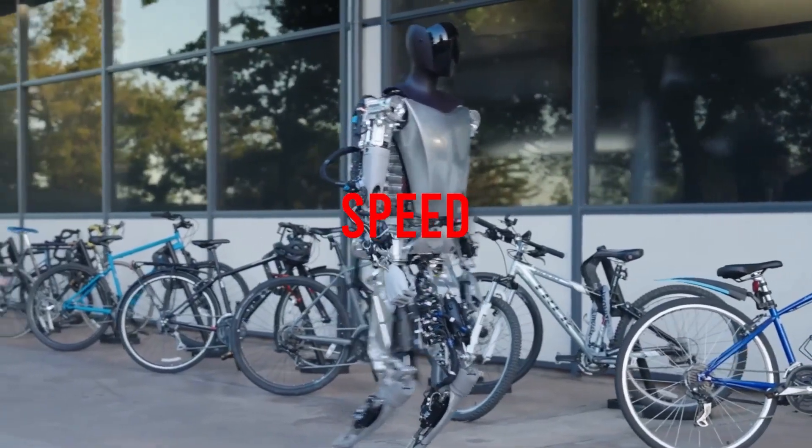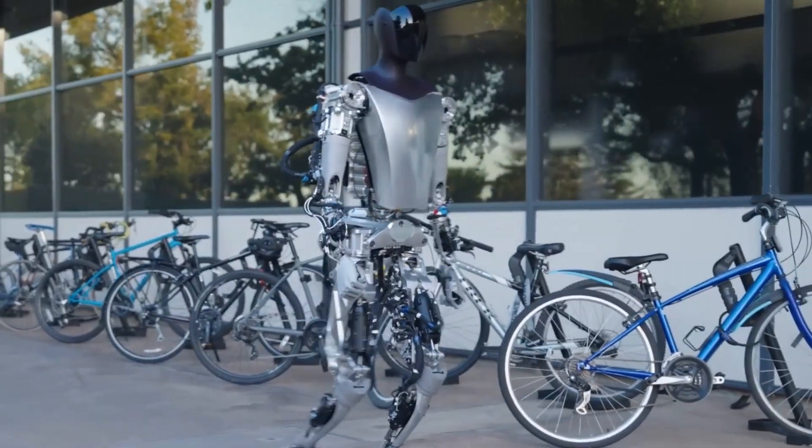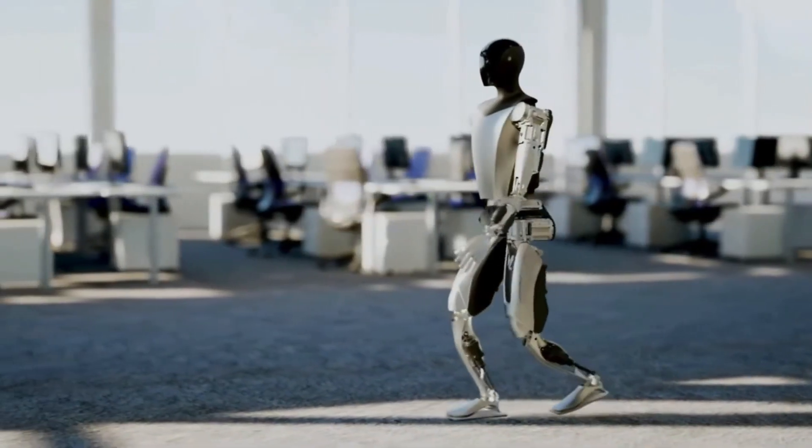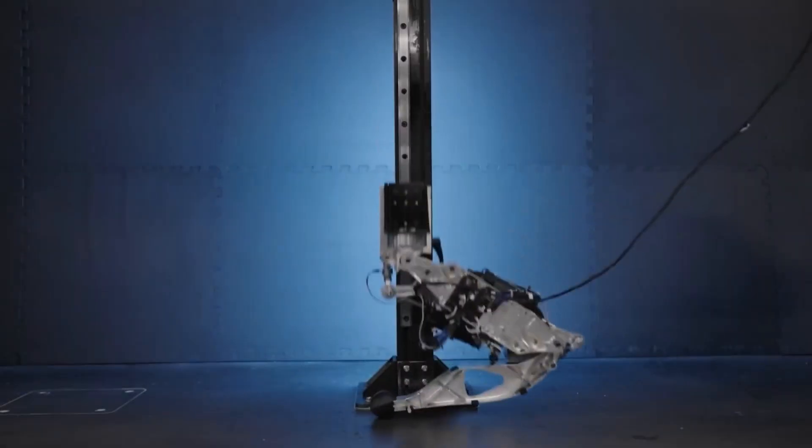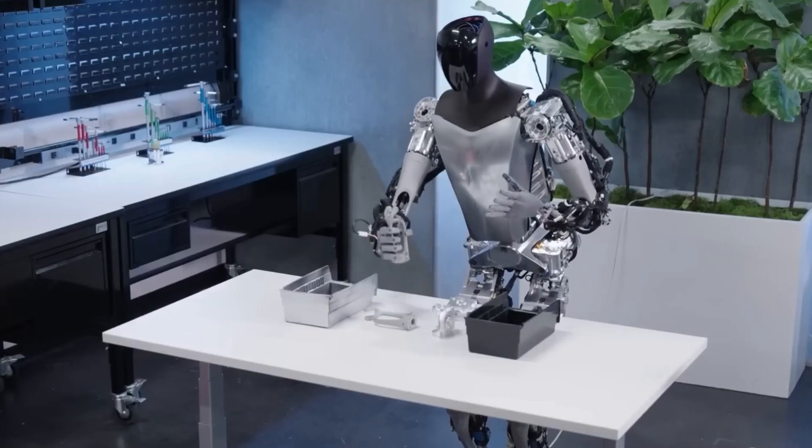Speed: Optimus can walk at a speed of 5 mph (8 kilometers per hour) and run at a speed of 15 mph. It can also climb stairs, walk on slopes or hills, and slide objects.